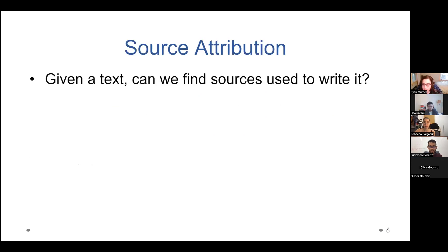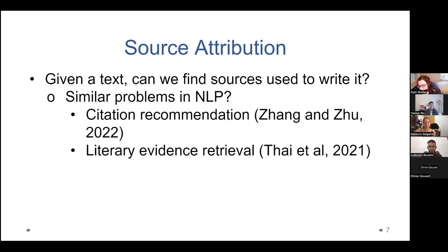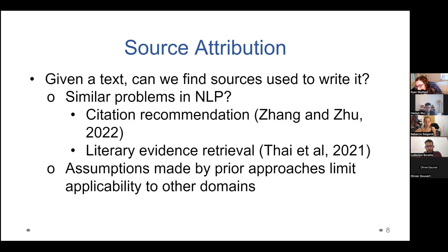So this problem of source attribution is fairly straightforward to describe. We have a text, and we want to figure out what are the sources that the author used to write it. And there are kind of similar problems in NLP, like citation recommendation. There's a lot of work that uses bibliometric information to try and suggest papers that might be useful for a writer to actually use in what they're writing. And then you have kind of more exactly the problem of literary evidence retrieval, where they actually try and go to say, here is a claim, there is some evidence somewhere in this text that supports it, can we go find it? But I think a lot of these prior approaches make assumptions about the structure and form of citation and the relationship between source and target that limits the applicability of these approaches to broader domains and to a wider set of problems.